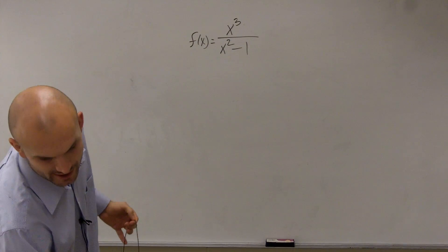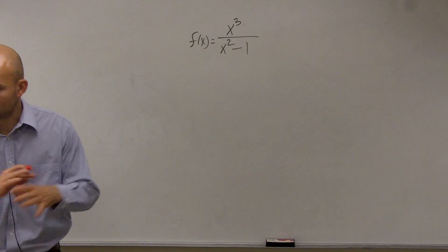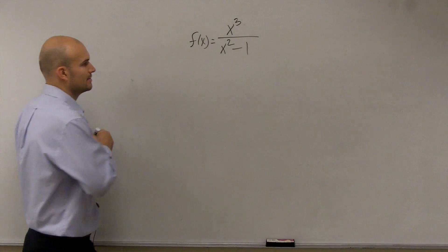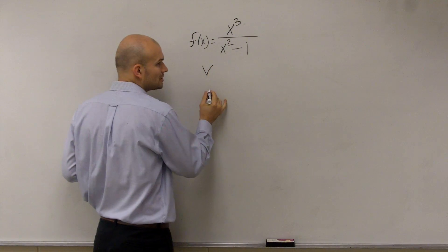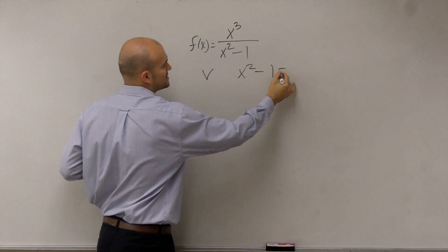The first thing we always want to take care of is finding the vertical asymptote. Automatically, let's just get that out of the way. So vertical asymptote, remember, you set your denominator equal to 0.